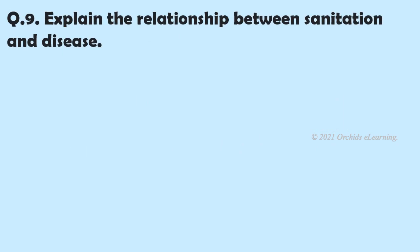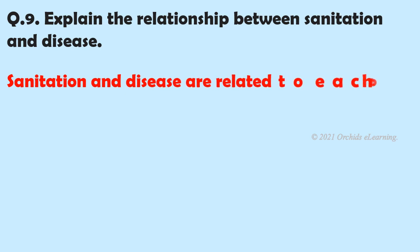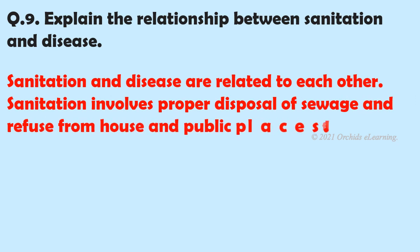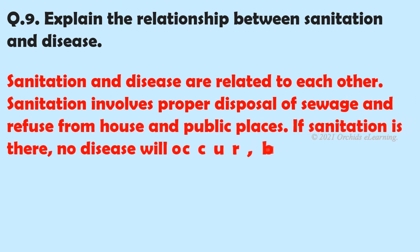Explain the relationship between sanitation and disease. Sanitation and disease are related to each other. Sanitation involves proper disposal of sewage and refuse from houses and public places. If sanitation is maintained, no disease will occur; but if sanitation is not maintained, various types of diseases will spread.